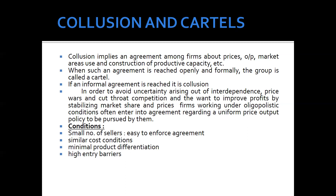When such an agreement is reached openly and formally, and it is a formal document that everybody knows about and all parties are bound to, the group is called a cartel. On the contrary, when an informal agreement is reached, it is called collusion. So to summarize: when it is an informal agreement, it is known as collusion, and when it is a formal agreement, it is known as a cartel.